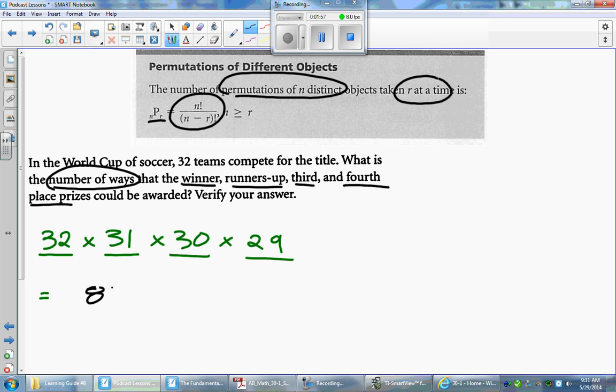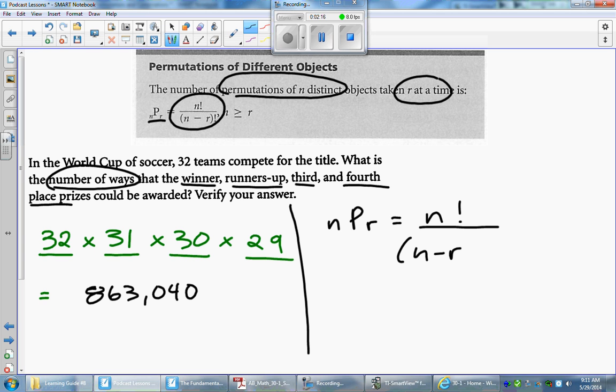All right, so it is quite the large number, but we are multiplying bigger numbers together. So this is the total number of permutations we have here, but I do want to show you how you could do this question using the formula. So we have the formula here. N permute R is equal to N factorial over N minus R factorial.